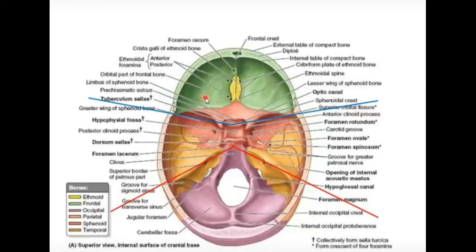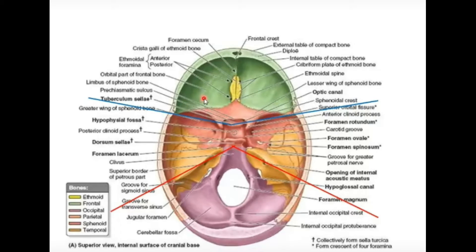The floor of the anterior cranial fossa contains the frontal lobes of the cerebral hemisphere — or the frontal lobes of the cerebrum. We have studied the cerebrum and its different lobes: frontal, temporal, occipital, and parietal. The frontal lobe, the anterior lobe of the cerebrum, is present in the anterior cranial fossa.